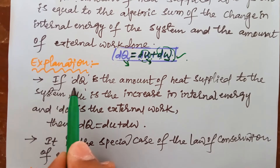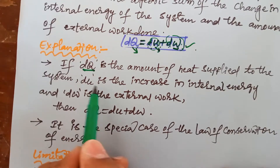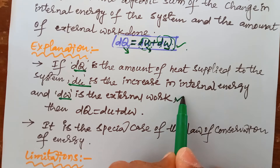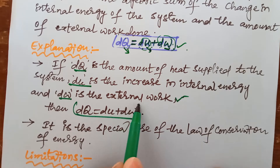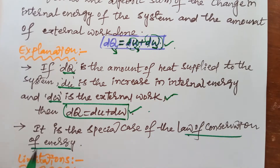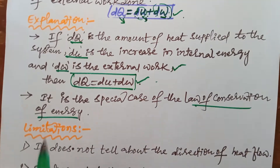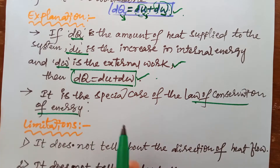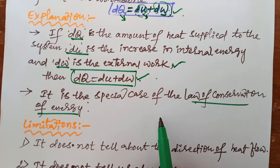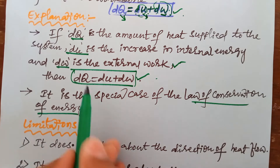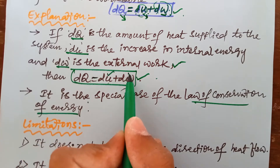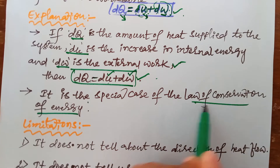Now, how to explain: if dQ is the amount of heat energy supplied to the system, dU is the increase in internal energy, and dW is the external work done, then dQ equals dU plus dW. So it is a special case of the law of conservation of energy. For example, light energy from sunlight falling on solar plates means that light energy, i.e., heat energy, is converted into electrical energy. Similarly, the heat energy supplied to the system changes into internal energy as well as external work done — that is why this is a special case of the law of conservation of energy.